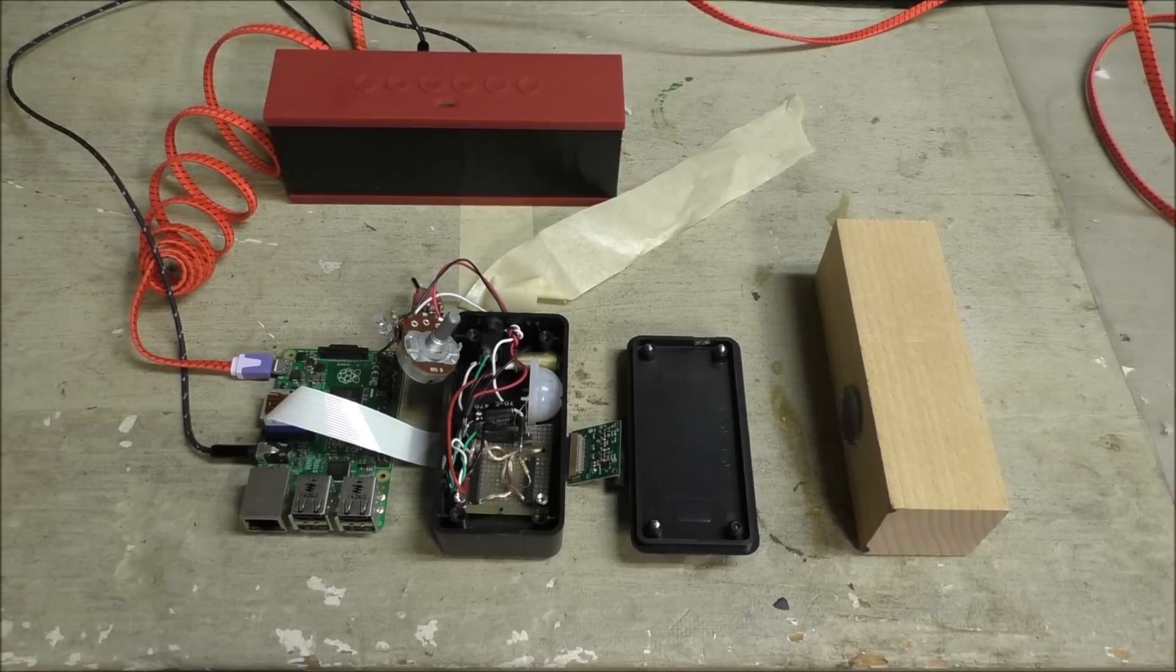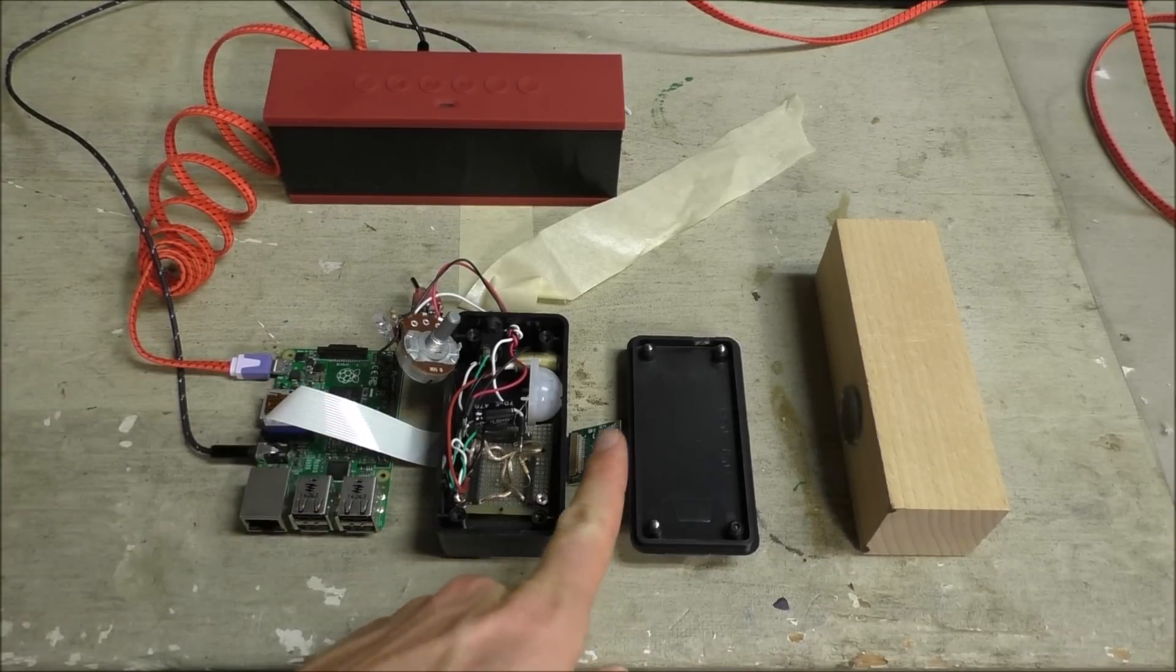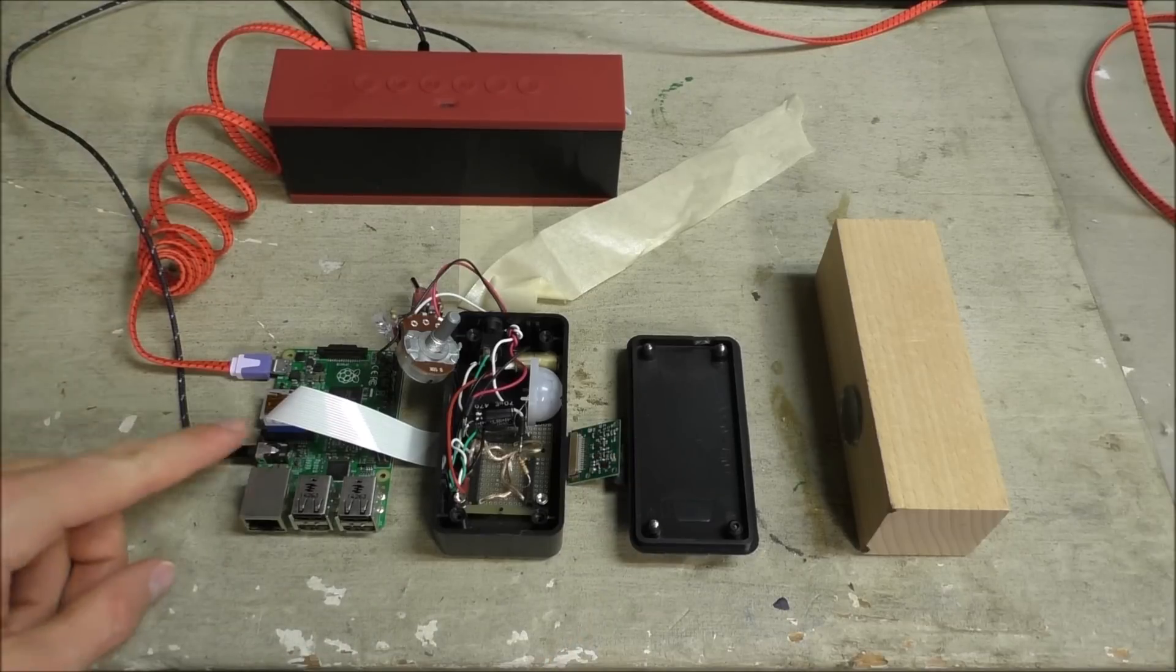Here's the system opened up so you can take a look at everything. We've got the Raspberry Pi 2 connected to the camera here and a speaker into the 3.5 millimeter jack. Pretty standard setup there.